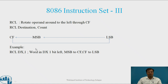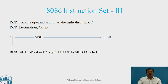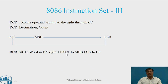Example for RCL: RCL DX, 1 — rotates the word in DX one bit left, MSB to CF and CF to LSB. Next is RCR — rotate operand around to the right through carry flag. Syntax: RCR destination, count. CF content is copied to MSB, bits rotate right through each position, and LSB is copied to carry flag. Example: RCR BX, 1 — rotates the word in BX right one bit position, LSB to carry flag and CF to MSB.